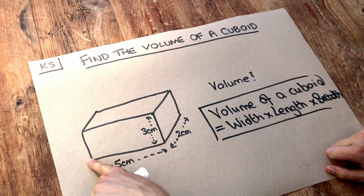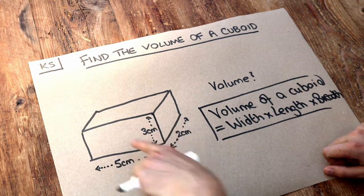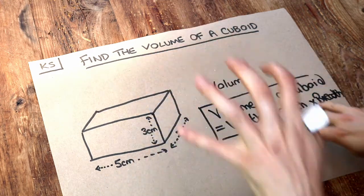So you've got this length which is the length, you've got the width of that rectangle and then the breadth is how far it comes in and out.